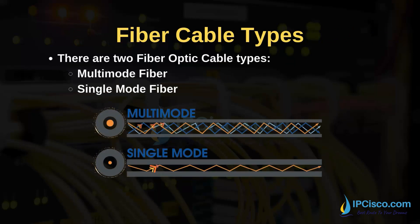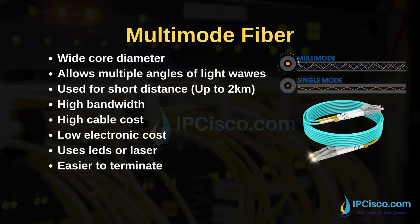The two main types are multi-mode fiber and single-mode fiber. You can see the main differences on the screen. Multi-mode fibers have a wide core diameter and allow multiple angles of light waves. Multi-mode fibers are used for short distances, up to two kilometers. These cables have high bandwidth. There is a high cable cost but low electronic cost. Multi-mode fiber optic cables use LED or laser to transfer data. It is easy to terminate these types of cables. There is an example of a multi-mode fiber on the screen.